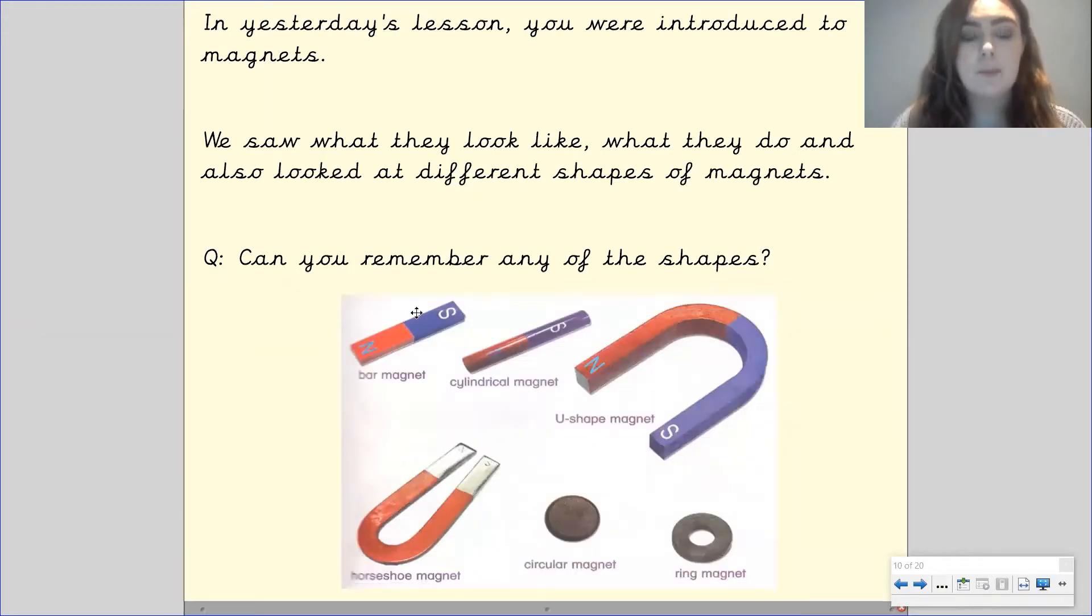Okay so we've got the bar magnet which is a rectangular sort of shape, the cylindrical magnet which is a cylinder, a u-shaped magnet which is in the shape of a u, the horseshoe magnet which looks like a horseshoe, also looks very similar to the u-shaped magnet but the two ends are closer to one another, a circular magnet which is a small circular black magnet and a ring magnet which looks very similar to the circular magnet but has a hole in the middle. Well done if you remembered any of those.